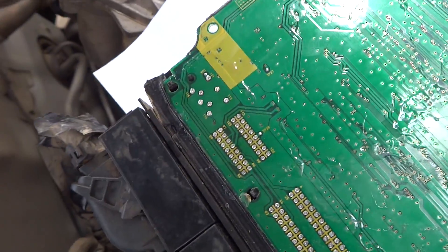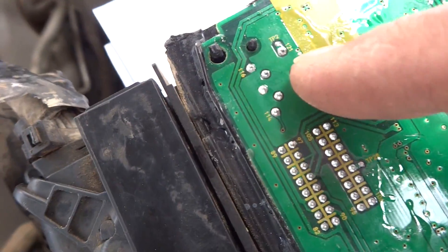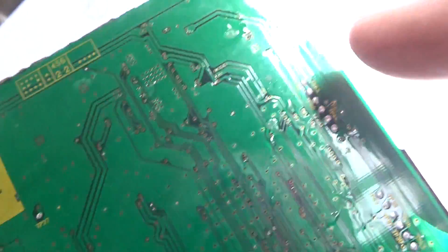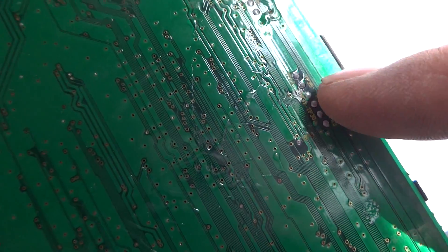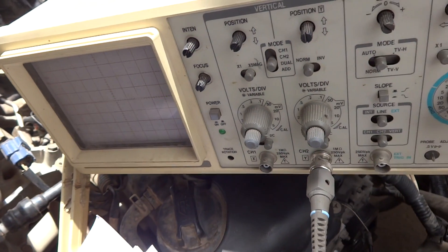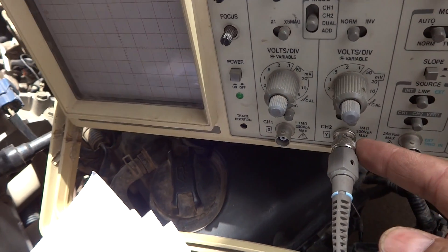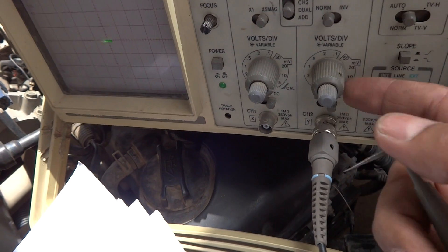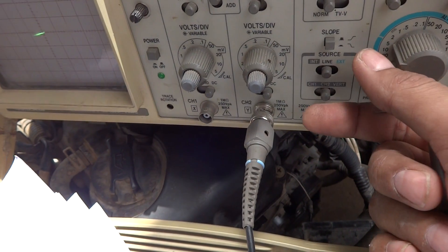There are test points which have been given here. I can read test point number two, and here are also some test points. I'm going to check it on the oscilloscope. Channel number two is connected, and the amplitude is set at five volts and frequency at five milliseconds.